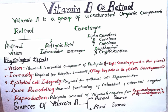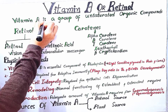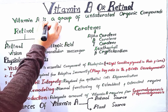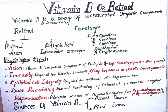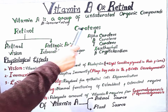Vitamin A is a group of unsaturated organic compounds, and all the compounds contain a beta-ionone ring. Vitamin A can be found in two principal groups: retinol and carotene.